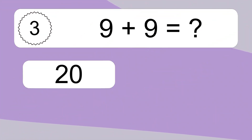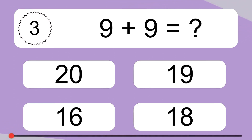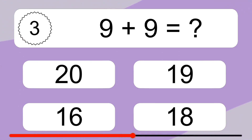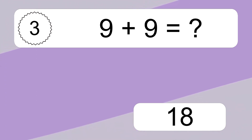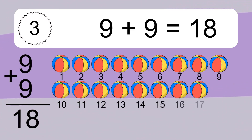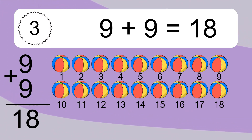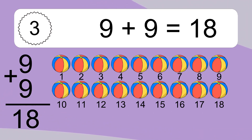9 plus 9 equals what? 1, 2, 3, 4, 5, 6, 7, 8, 9, 10, 11, 12, 13, 14, 15, 16, 17, 18.